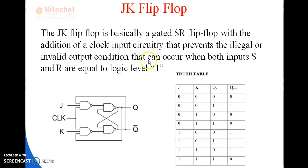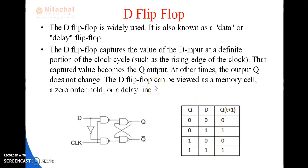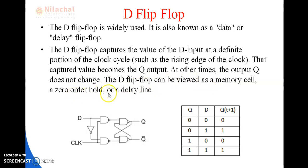Next, we come to D flip-flop. The D flip-flop is widely used and is also known as a data or delay flip-flop. The D flip-flop captures the value of the D input at a definite portion of the clock cycle, such as the rising edge of the clock. That captured value becomes the Q output. At other times the output Q does not change. The D flip-flop can be viewed as a memory cell, a zero-order hold, or a delay line.